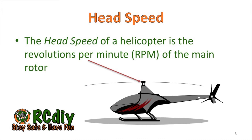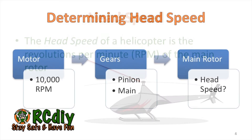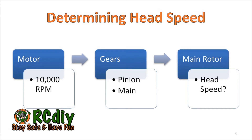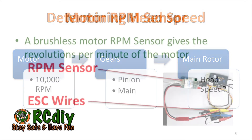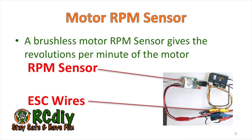The head speed of a heli is the RPM of the main rotor. The motor is linked to the main rotor using gears. If the RPM of the motor is known, then using the gear size information, the head speed can be calculated. To get the RPM of the main motor, an RPM sensor is used. There is a link to the documentation on how to set up an RPM sensor in the description below this video.